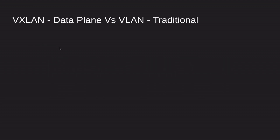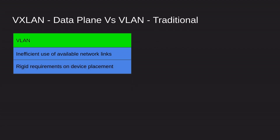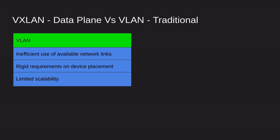Let's compare the data plane against a regular traditional VLAN. In the traditional VLAN, we have inefficient use of available network links and rigid requirements on device placement. For example, if you configure VLAN 5 on port number 3, you can only place that computer or server on that port. If you move it somewhere else, you have to go back into the switch and configure that VLAN again. It also has limited scalability.